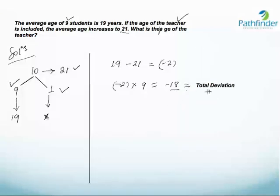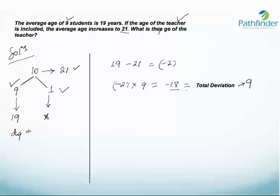So minus 18 is the total deviation on 9 students. We know that the deviation on the 9 students — written as d9 — plus the deviation on the age of the teacher must sum to equal zero.